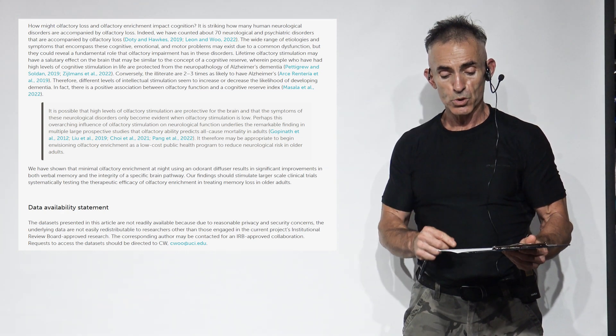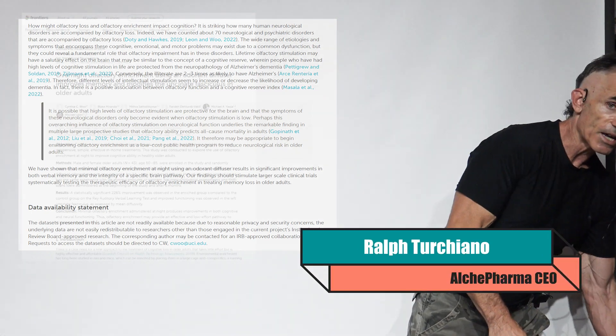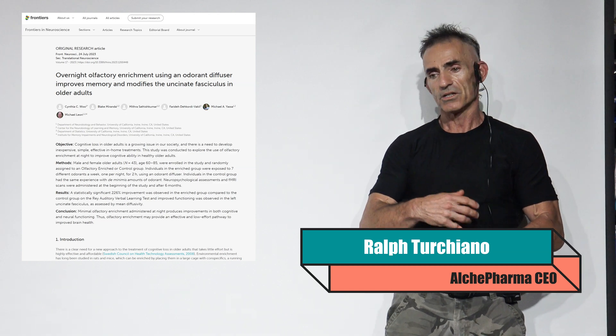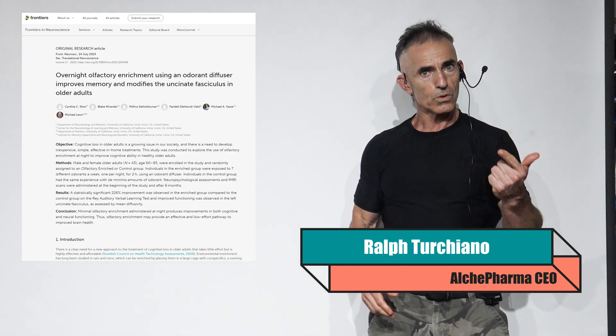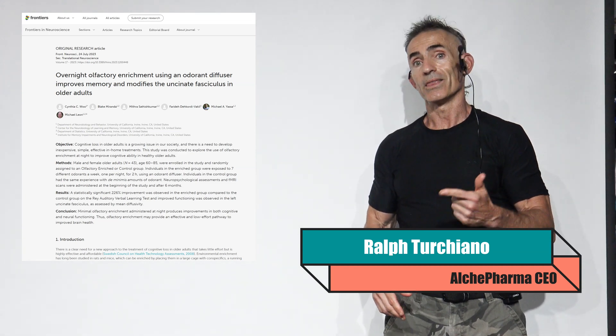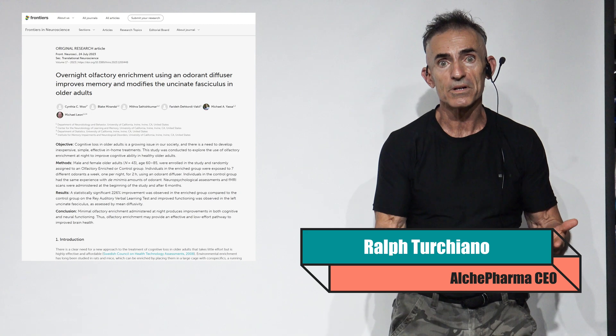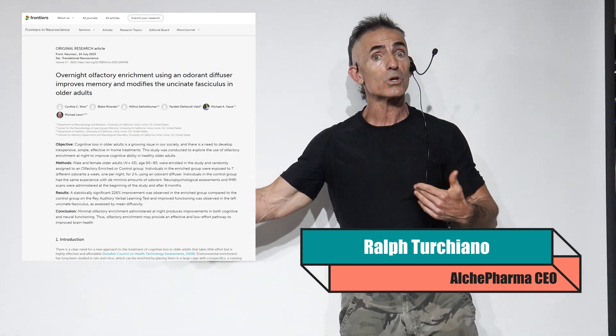It may be appropriate to begin envisioning olfactory enrichment as a low-cost public health program to reduce neurological risk in older adults. Can you imagine something so incredibly simple that just rotates the scent every night - rose, rosemary, lemon, lavender, orange, eucalyptus, or peppermint - just for every night for at least a six-month period? Who knows what happens when it goes further.